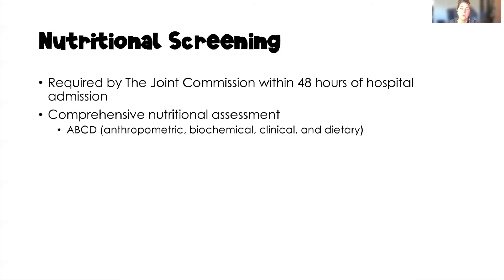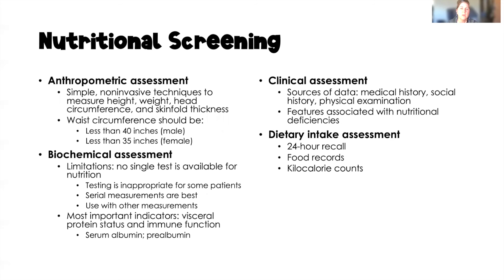From the nutritional screening, we might do a more detailed nutritional assessment, known as the ABCD: anthropometric measurements, biochemical measurements, clinical measurements, and dietary measurements. Anthropometric assessments are simple, non-invasive techniques — we've already discussed height and weight, but we also might do head circumference especially on young children, skinfold thickness, and waist circumference. Waist circumference is just as important as BMI: for males it should be less than 40 inches, and for females less than 35 inches, which is considered indicative of a normal weight for an adult.